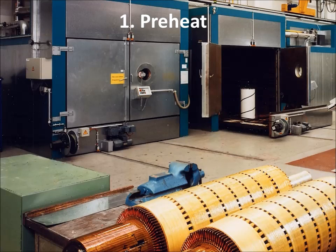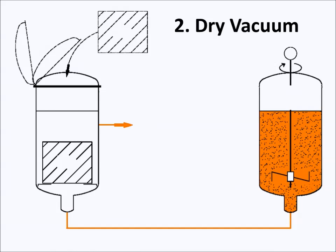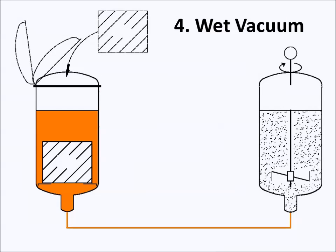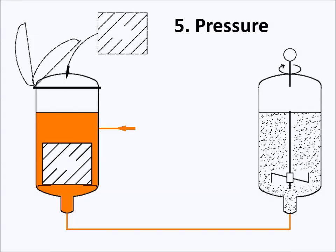The vacuum pressure impregnation process consists of several steps. First, the part is placed in an oven and preheated in order to evaporate any moisture and improve resin penetration. A dry vacuum is then applied to remove air and any remaining moisture. The resin is introduced into the chamber from the bottom up and fills in the gaps in the material. A wet vacuum is then applied and kept at this level for a certain amount of time. Finally, through the use of dry air, nitrogen, or other gases, pressure is applied to the chamber to further increase penetration.